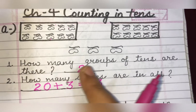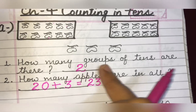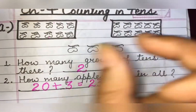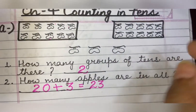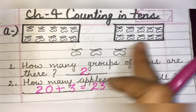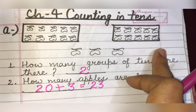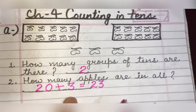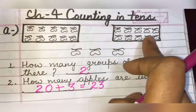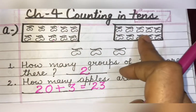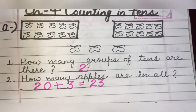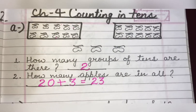To recap: when we were asked about the groups of 10, there were 2 groups. The total is 20 plus 3 — that is, 10 plus 10 plus 3 — which equals 23.